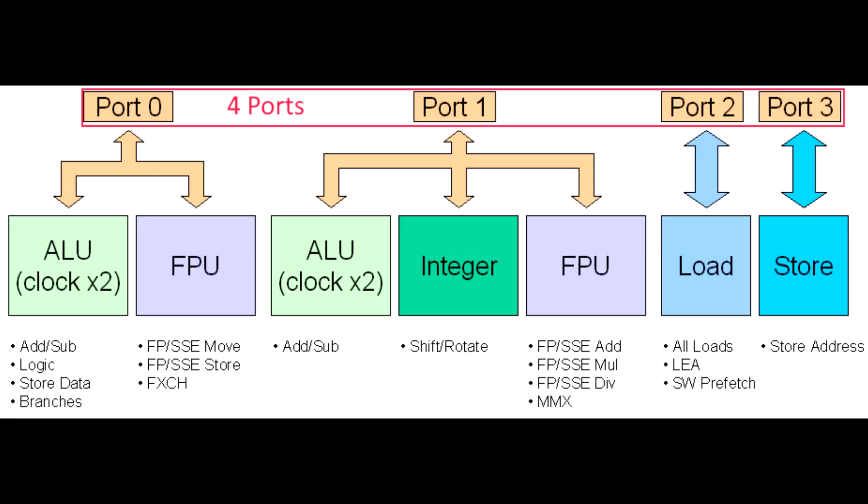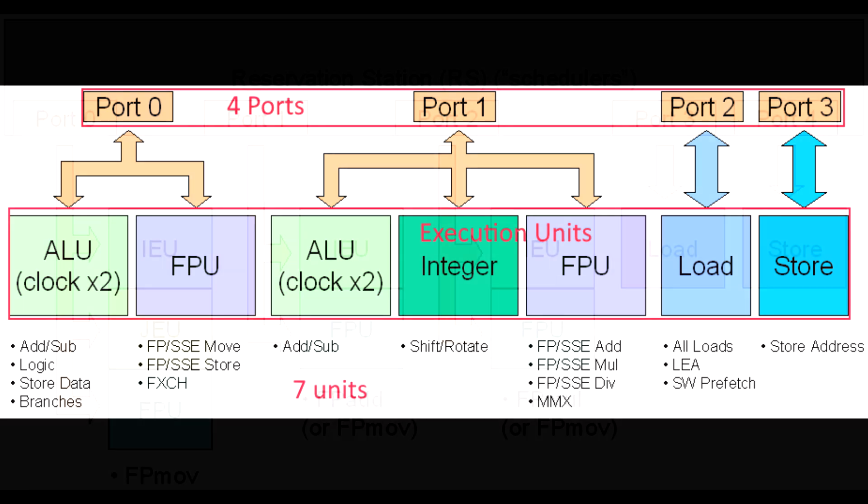By the way, the ports are kind of like lanes or buses that gather data to the execution units, and there are typically multiple execution units per port. But to put it in other light, Netburst had 7 execution units, whereas the P6 had 13.